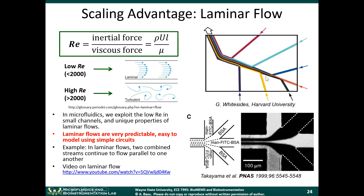If you wanted to get this parallel-flow behavior in a larger pipe, you'd have to flow liquid at a very low velocity. Generally, with fluid flow through a large pipe, you end up getting turbulence and the liquids mix with each other — they turn around each other and mixing is enhanced. One of the nice features of laminar flow is that you can create very well-defined gradients of chemicals by combining them in laminar flows.